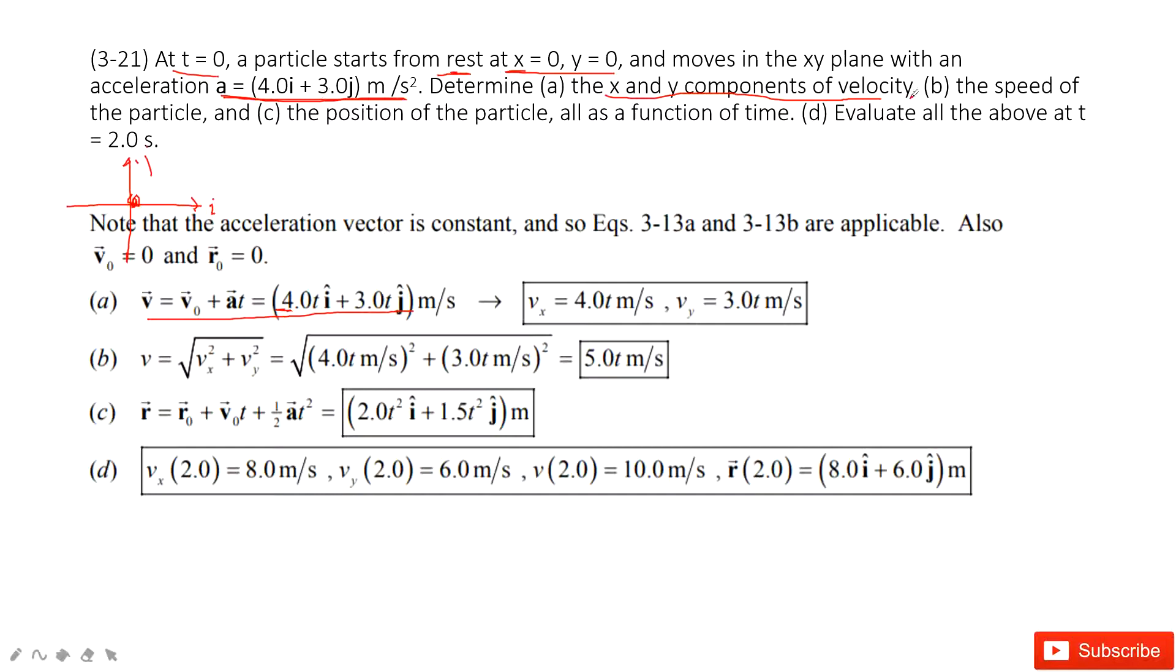Then we need to find the speed of the particle. The speed is the magnitude of this velocity. Then we take 4 squared plus 3 squared square root and times t. So this is 5t.